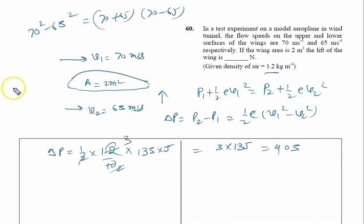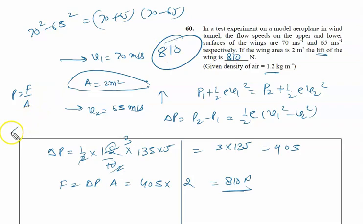Now, force we have to calculate. We know pressure is force upon area, so force equals pressure times area. The pressure is 405 Pa and area is 2 m², so force equals 810 Newtons. The lift of the wing is 810 Newtons, so the right answer is 810 Newtons.